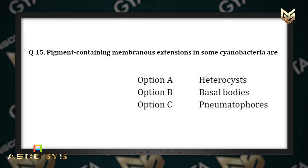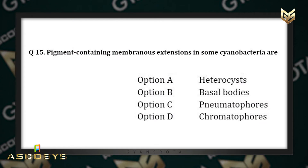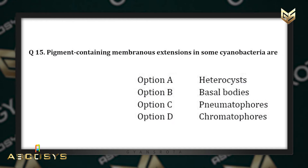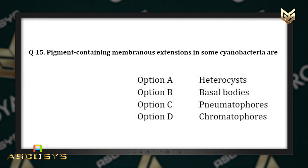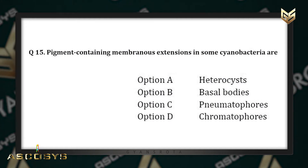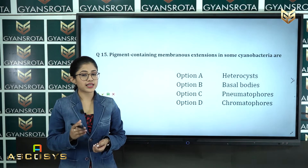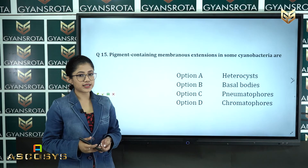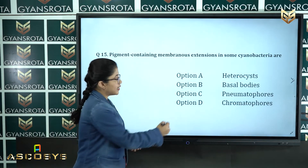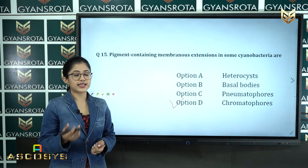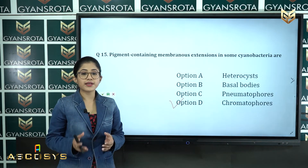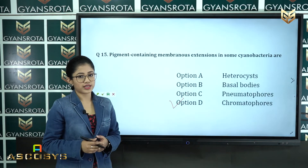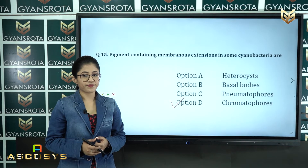Question number fifteen: pigment-containing membranous extensions in some cyanobacteria are — option A: heterocysts, option B: basal bodies, option C: pneumatophores, option D: chromatophores. This is from class 11 chapter 2, biological classification. The correct answer is option D — chromatophores are the pigment-containing membranous extensions in some cyanobacteria.